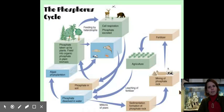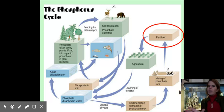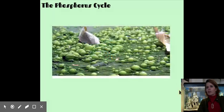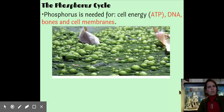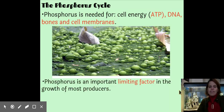And then the last cycle we have is the phosphorus cycle. I'm not going to talk a whole lot about the phosphorus cycle, except the part of the phosphorus cycle that is very out of balance right now. And that has to do with fertilizers. The phosphorus cycle is important because we need phosphorus for ATP. We need it for DNA and we need it for our bones and cell membranes. Sounds kind of important to me. Phosphorus is an important limiting factor. We're going to learn about that in just a little bit. An important limiting factor in the growth of most producers. What that means is if you run out of something, then that thing can't grow anymore. So if you run out of phosphorus, then these plants can't grow anymore. So it's really important.